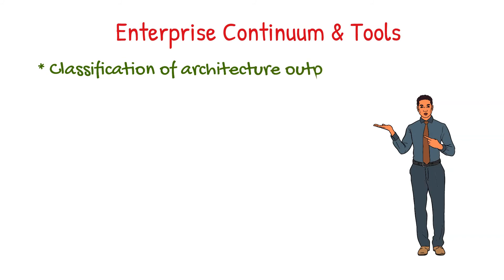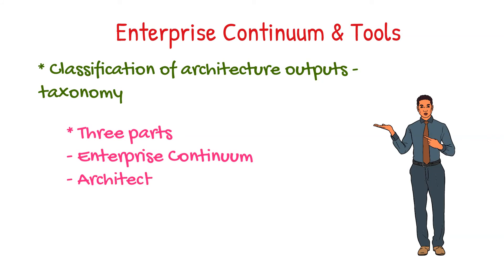The fifth part of TOGAF is the Enterprise Continuum and Tools, which deals with Taxonomy. Taxonomy is essentially about classification of architecture outputs. There are three parts addressed in the Enterprise Continuum and Tools part. These are the Enterprise Continuum, Architecture Continuum where we have the Architecture Building Blocks, and the Solutions Continuum where we have the Solutions Building Blocks.